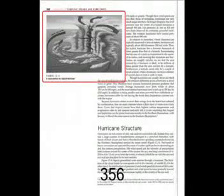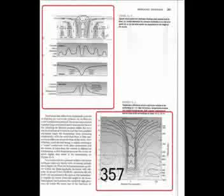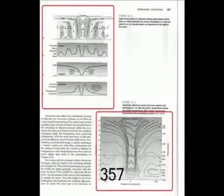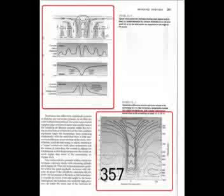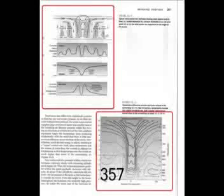I really like the picture at the top of page 356 that shows the structure of a hurricane much better than anything I could have drawn. Notice how the low level circulation is cyclonic and the upper level circulation is anti-cyclonic. The pictures on page 357 are nice diagrams showing what the structure of a hurricane is like, and we'll be using these figures in class.